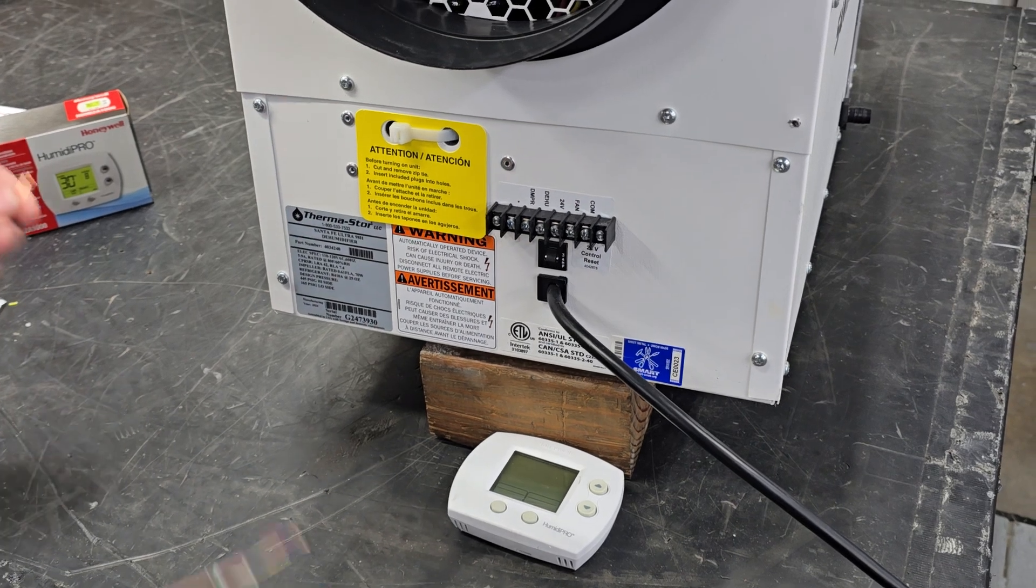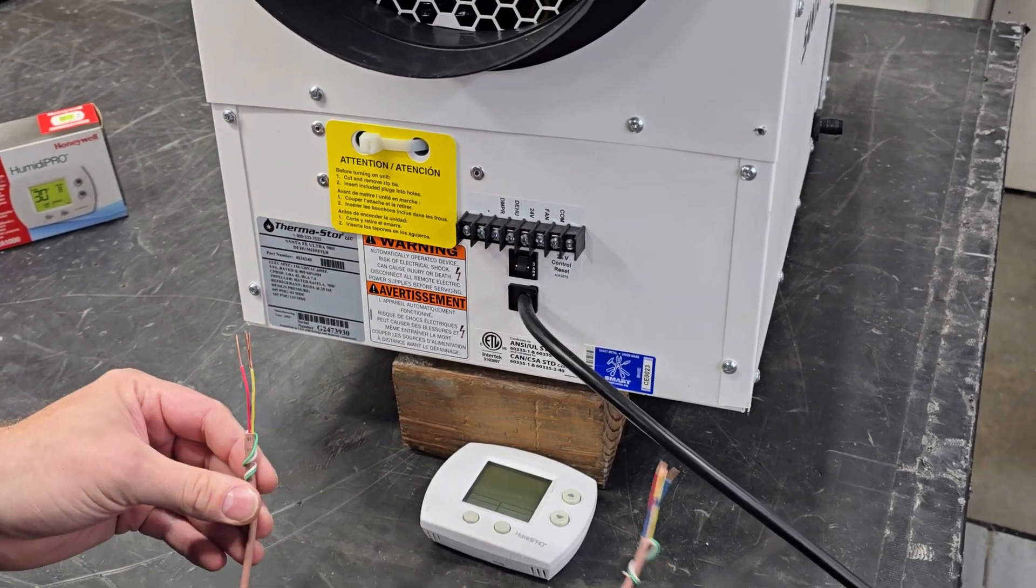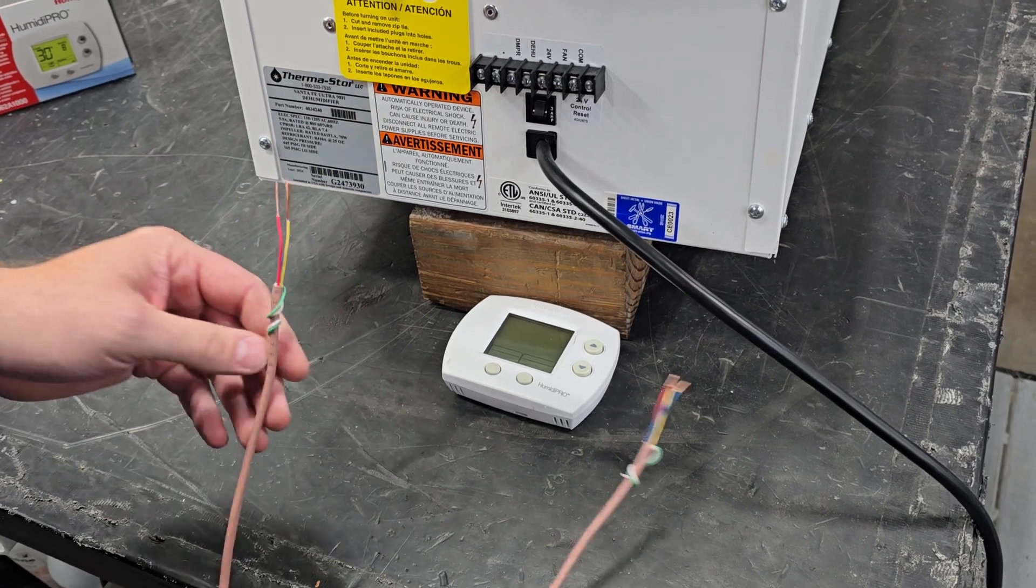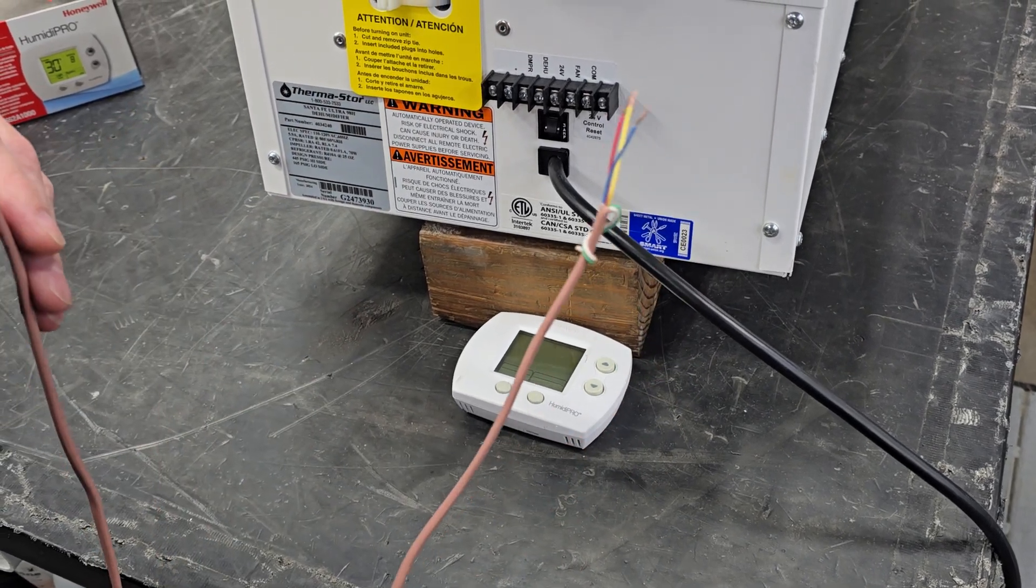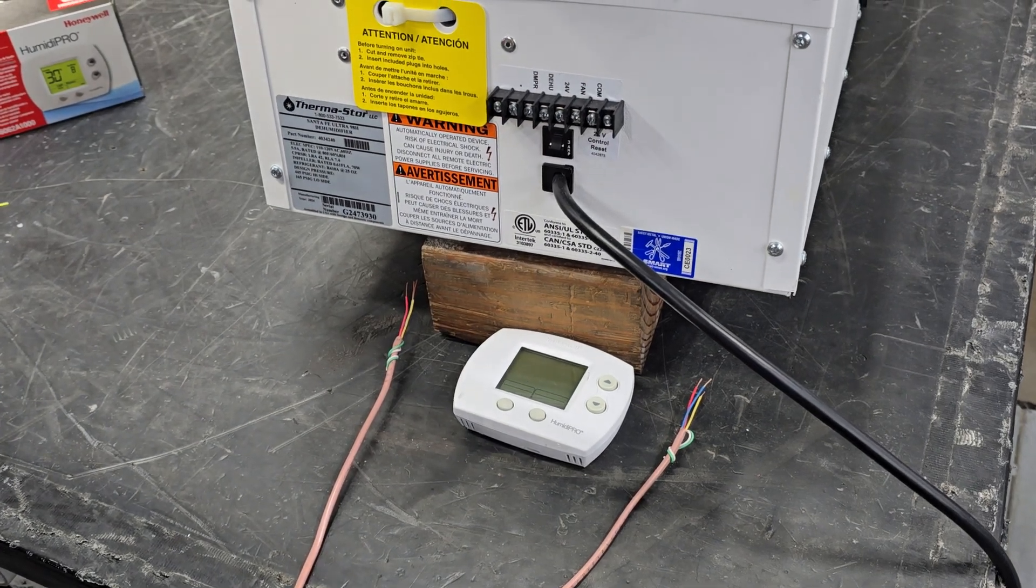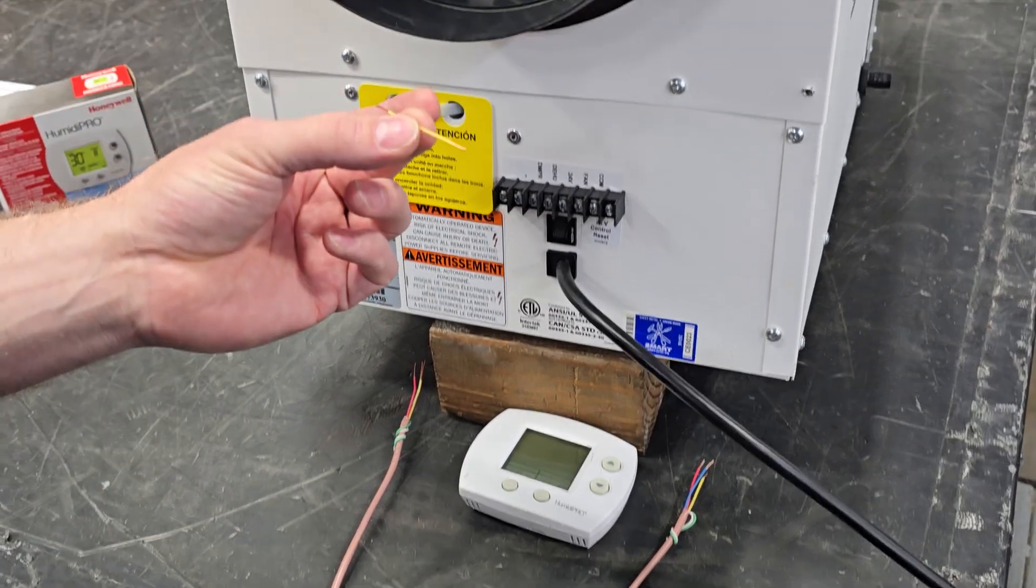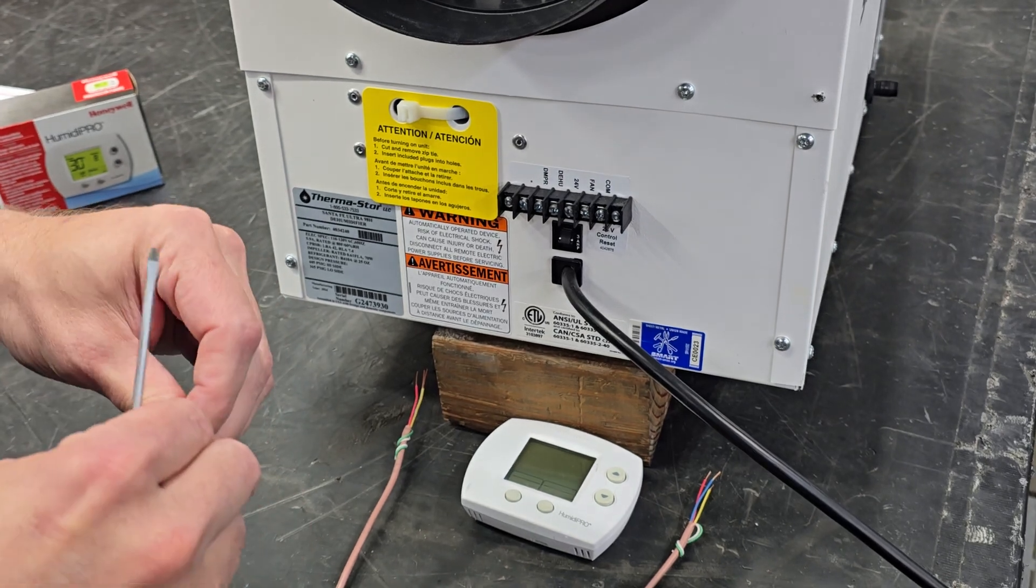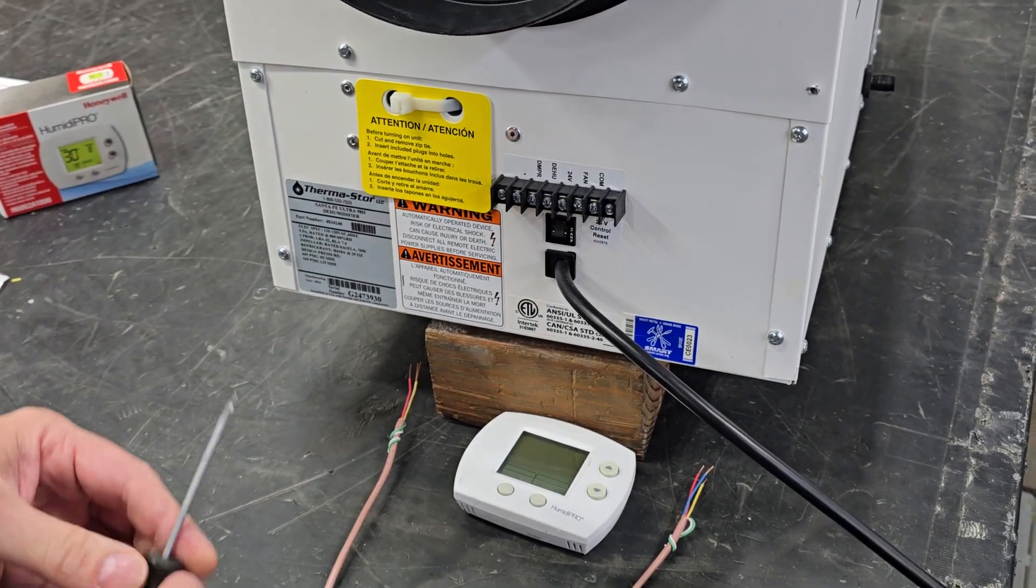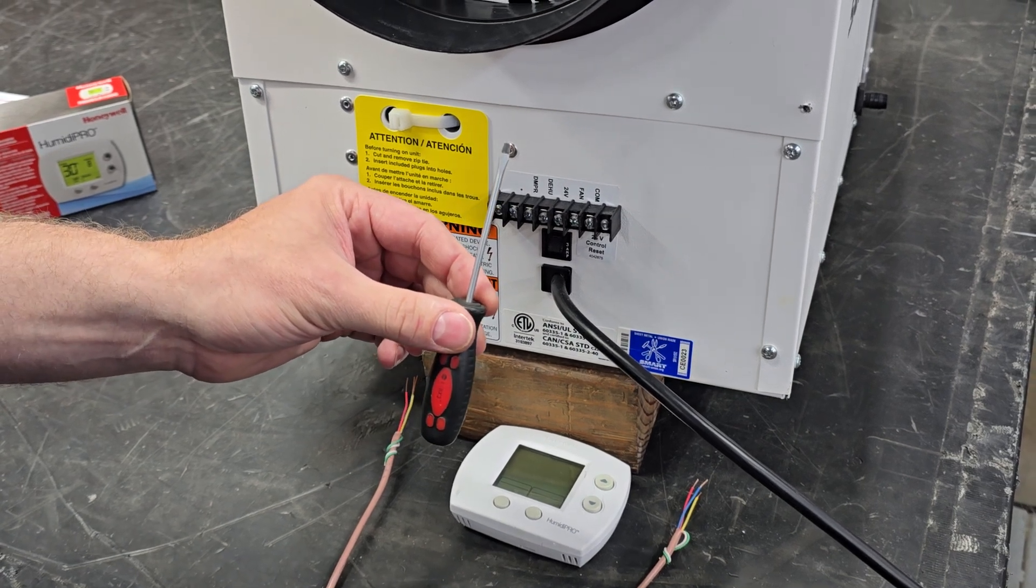The first step is to get yourself a piece of thermostat wire. It has to be at least three wires or more, typically it'll be five. You'll also need to make yourself a small jumper wire with stripped ends like this. This will be used later. And then you'll also need a small flathead screwdriver.